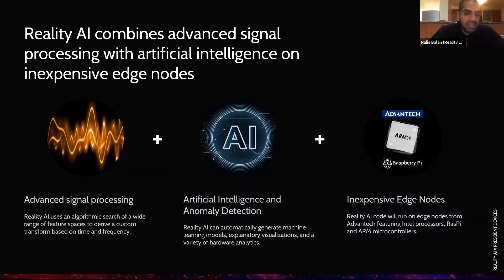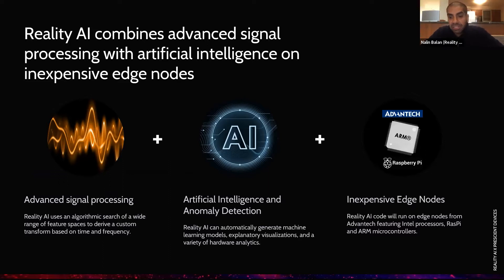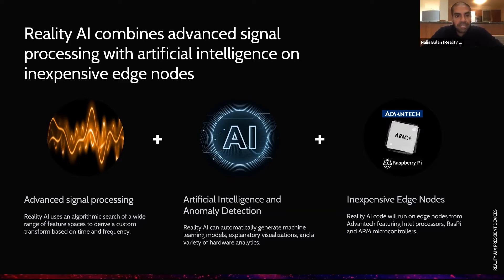We focus on providing edge AI software for advanced sensing in embedded industrial IoT systems. Our proprietary approach combines advanced signal processing with machine learning techniques for optimal feature extraction on sensor data sets. The resulting machine learning models are lightweight enough to be deployed in commodity hardware, including 32-bit microcontroller-based systems such as the ARM Cortex-M series — effectively efficient, cost-effective machine learning deployments.